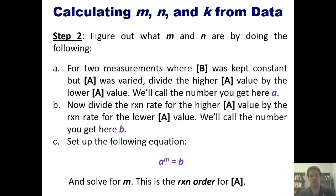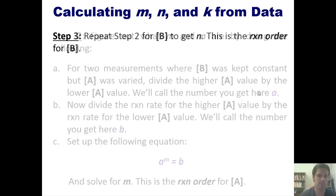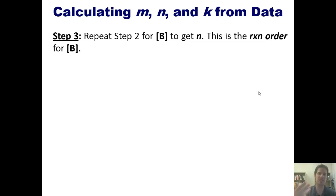I realize these steps look really baffling. Please bear with me. After we get through these, I'll do an example and you will see how to actually make this happen. Step three, repeat step two for B in order to get N. This gives you the reaction order for B.